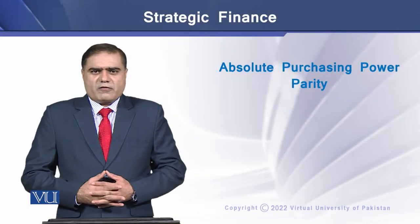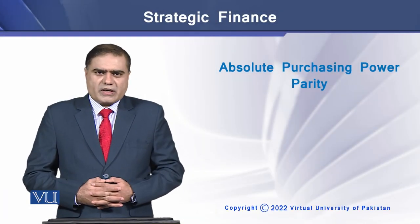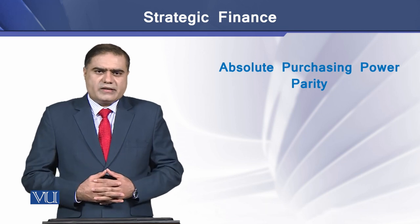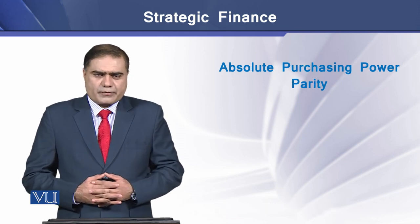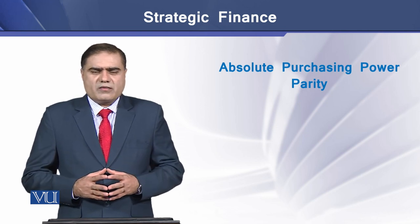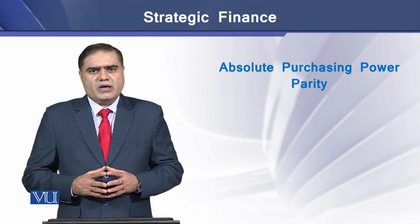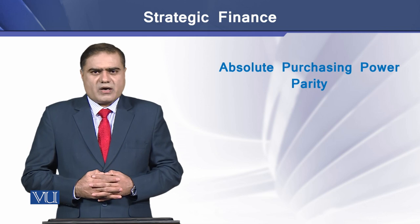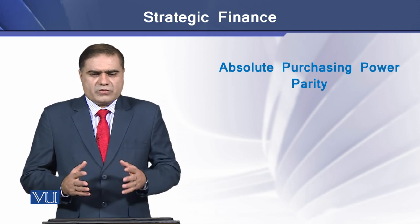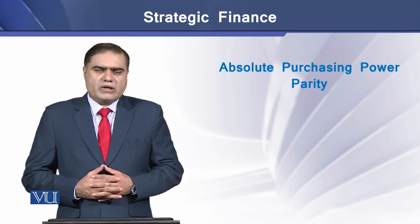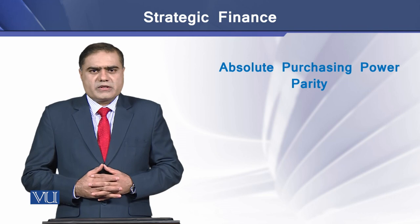Purchasing power parity refers to an idea that the exchange rate adjusts itself in order to keep the purchasing power constant among different currencies. There are two forms of purchasing power parity: the first form is known as absolute purchasing power parity, whereas the second form is known as relative purchasing power parity.